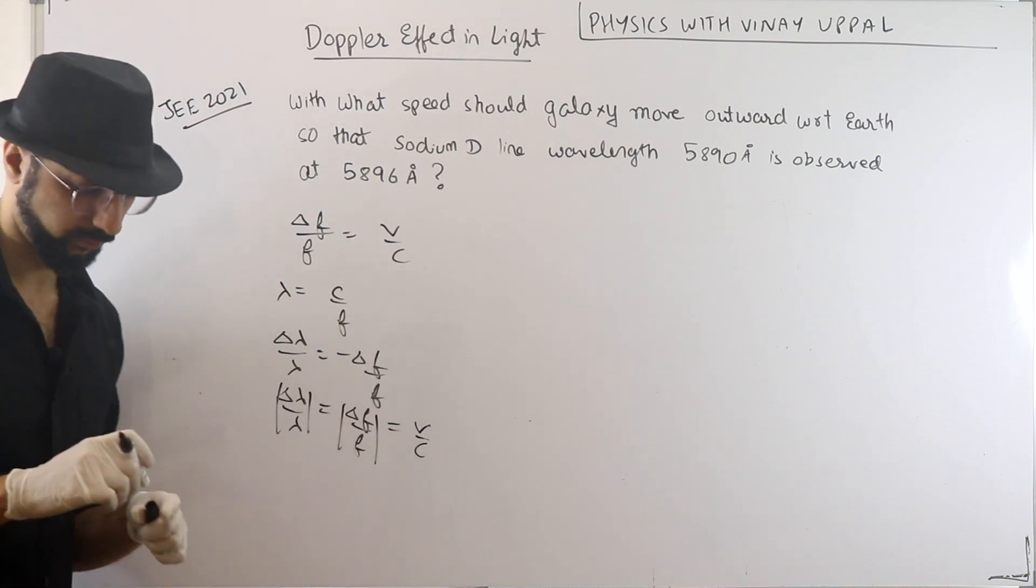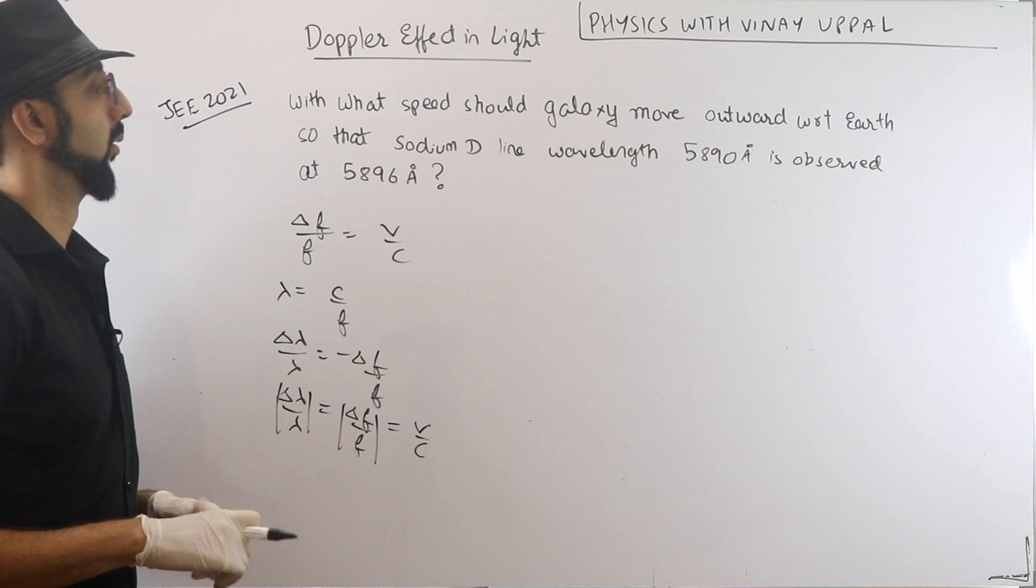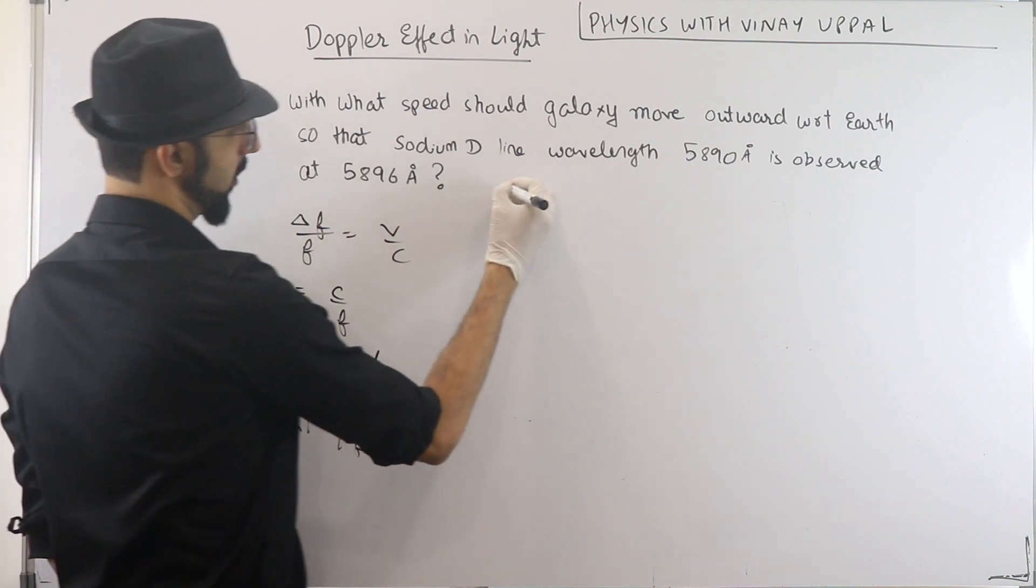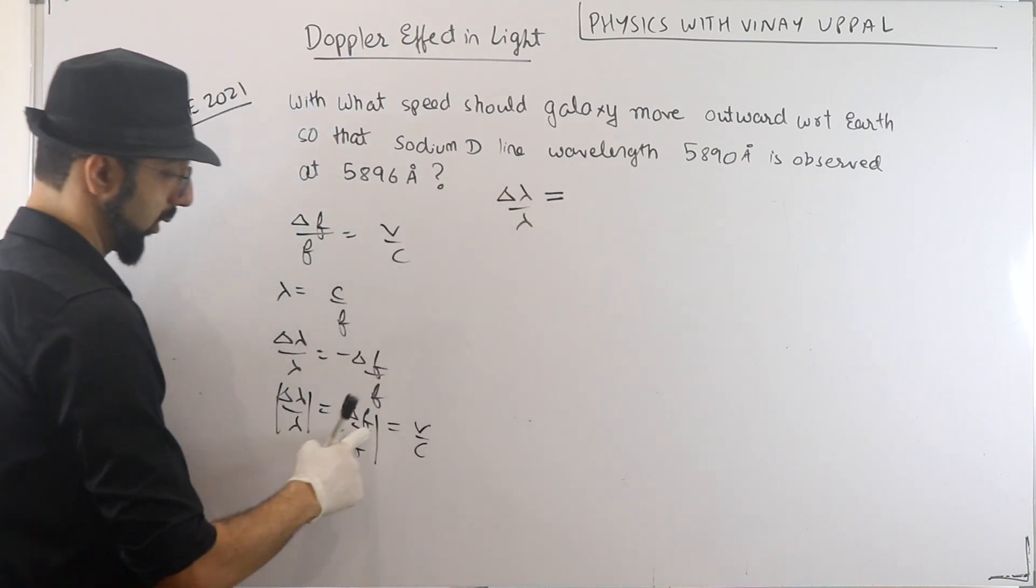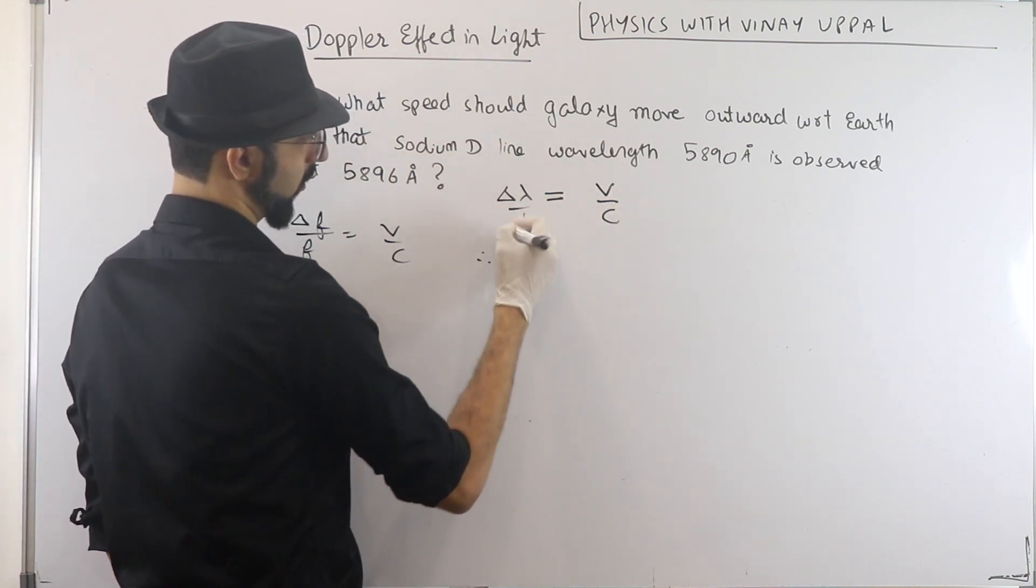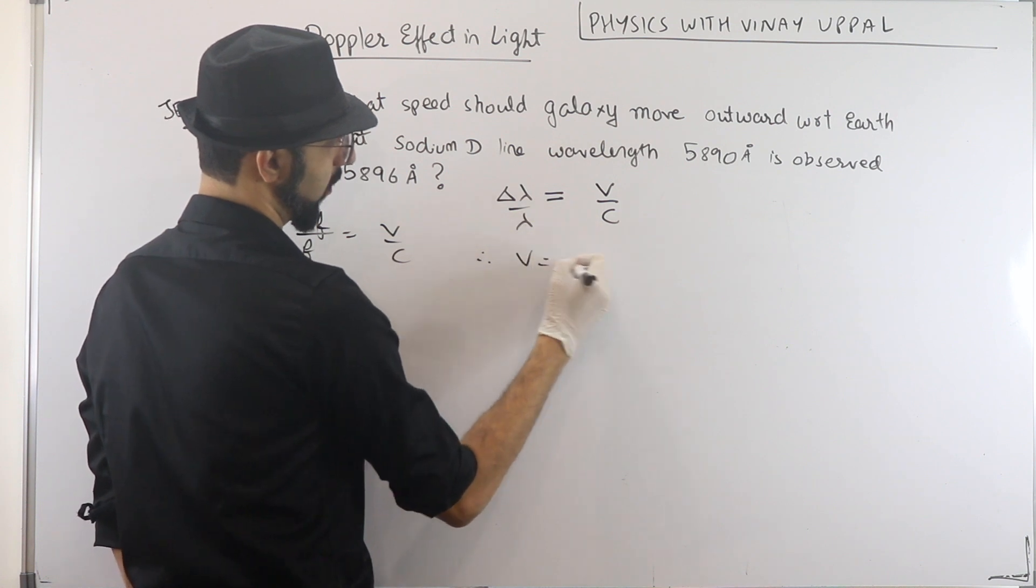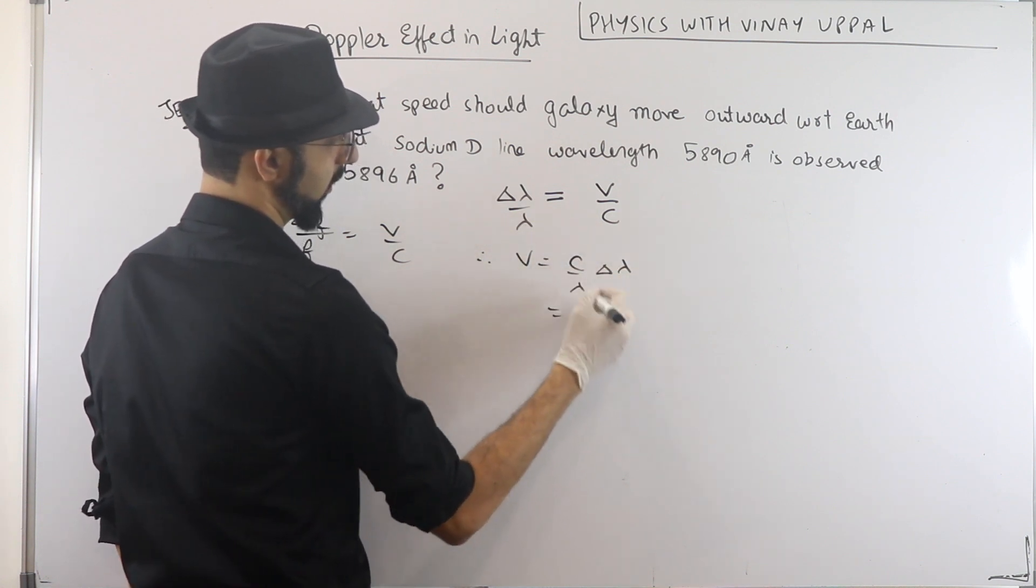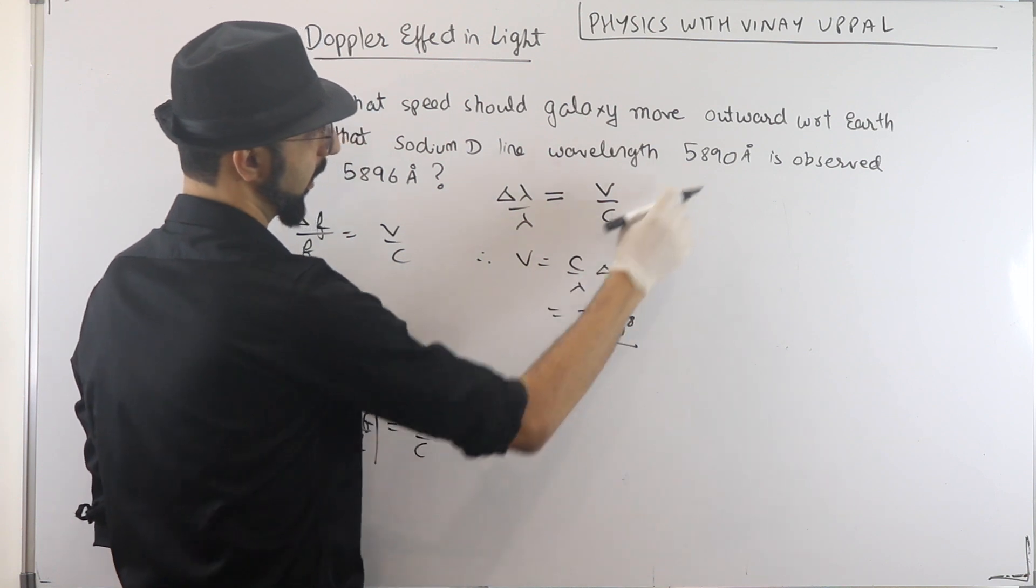Alright. So delta lambda by lambda is equal to V by C. So I can say V is equal to C by lambda delta lambda. Correct? C is 3 into 10 power 8. Lambda kitna hai? 5890 Angstrom.